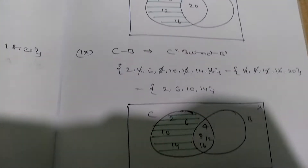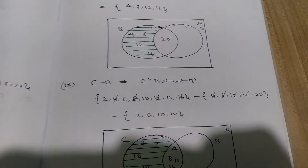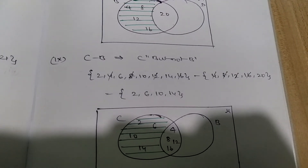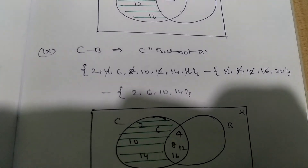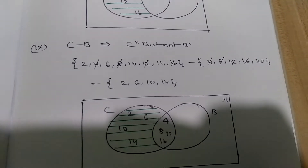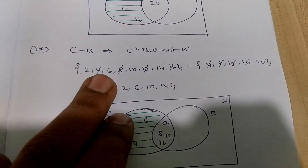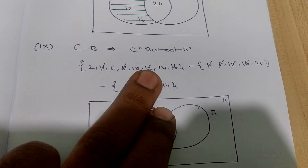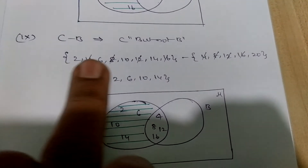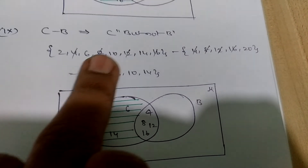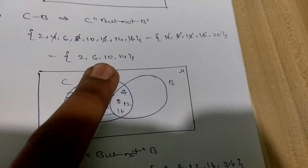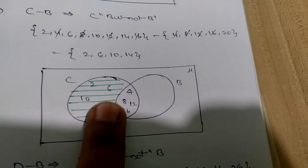Coming to C minus B — that indicates C but not B — nothing but multiples of 2 and multiples of 4. Here we get several common elements: 4, 8, 12, and 16 are all repeated. Strike those repeated values. The elements left in set C are 2, 6, 10, 14. This is the only-C region, so that is what I mention in the Venn diagram.